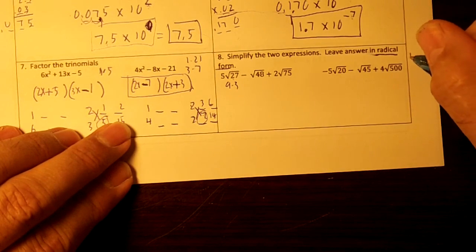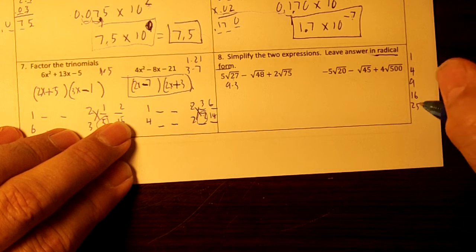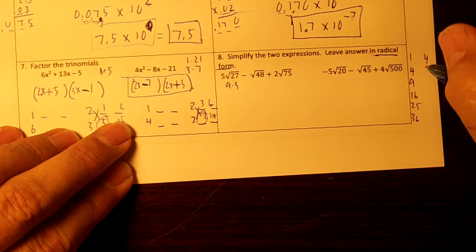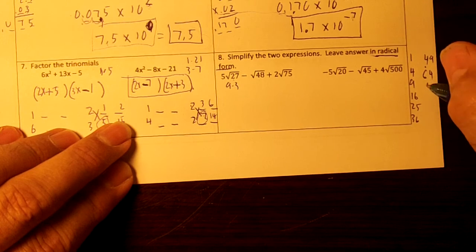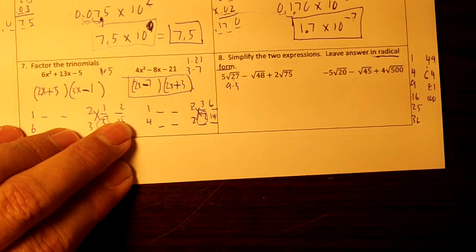These numbers are awesome. 9, 64, 81. These are the perfect squares right here. So the perfect square that goes into 27 is 9 and 3. Underline the 3.